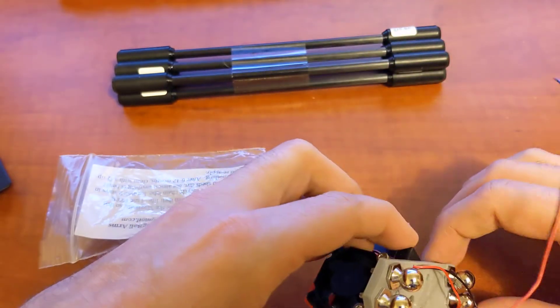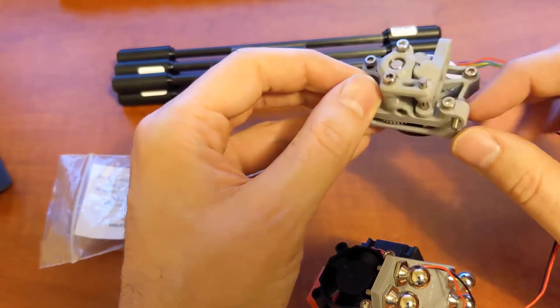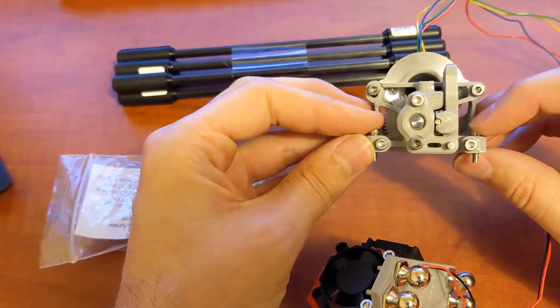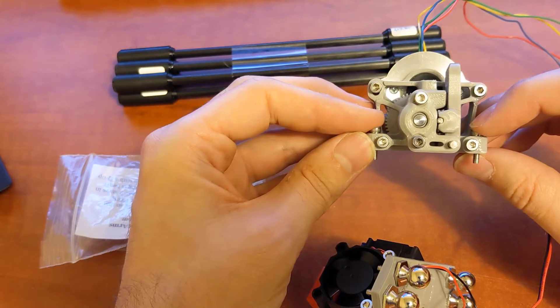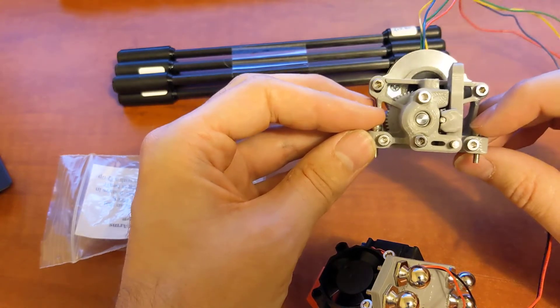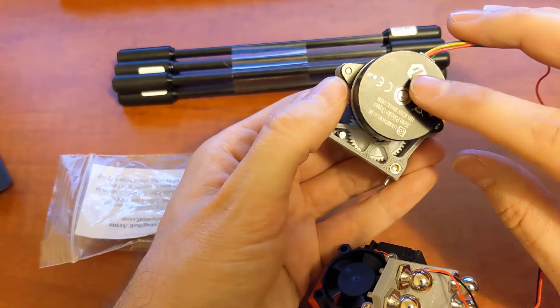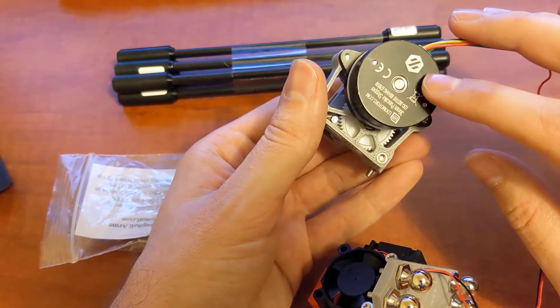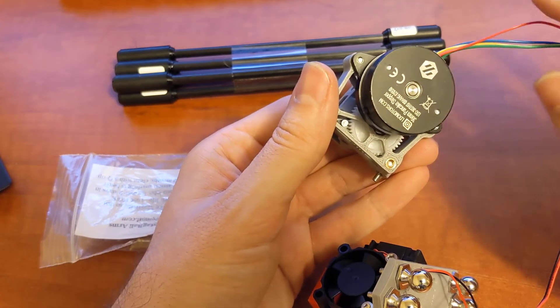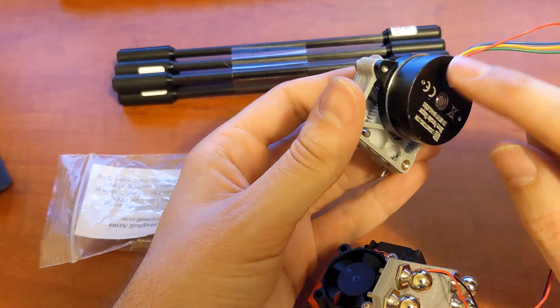So next up is the direct drive extruder. This is the Sherpa mini. This is made by Annex Engineering. I'll put a link below so you can get to the GitHub. This is 3D printed. This is an LDO pancake motor.